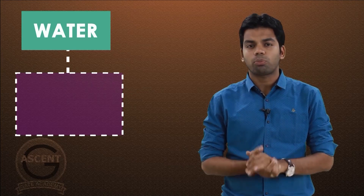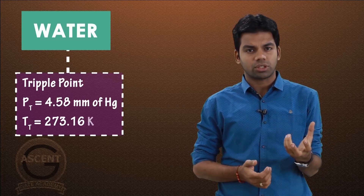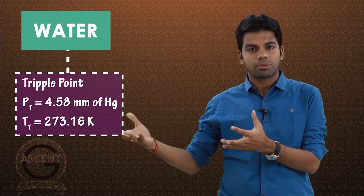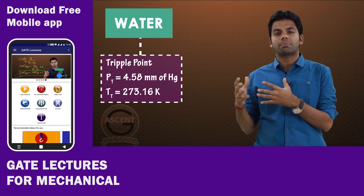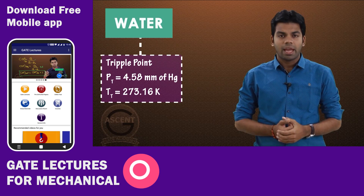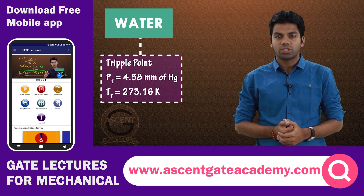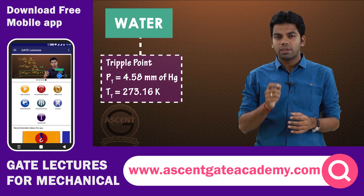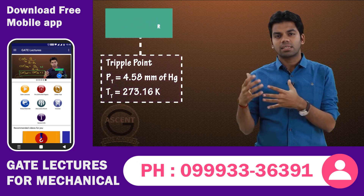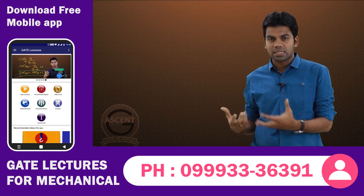For water, the triple point pressure is around 4.58 mm of Hg — a very, very low pressure, as 0 mm of Hg is absolute zero pressure. The triple point temperature for water is 273.16 Kelvin. At this particular pressure and temperature, water will exist in all three phases: ice, liquid water, and steam.